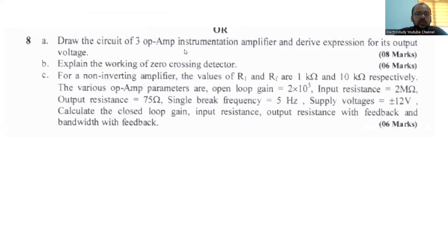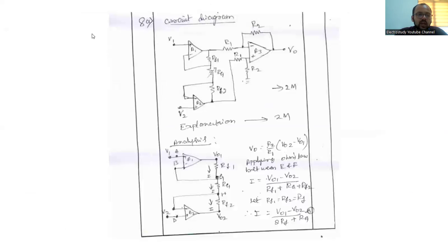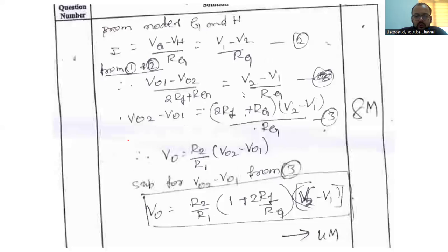Question number 8A. Draw the circuit of three op-amp instrumentation amplifier and derive expression for output voltage. We have to draw the circuit diagram. Like this you have to provide the circuit diagram. This is our circuit diagram. Draw the circuit diagram. Better give the brief explanation. You have to perform the mathematical analysis like this. You try to keep on working. Perform the mathematical analysis. If you refer any other textbooks, you can go ahead. Whichever is comfortable, you can go ahead with that. Ultimately, you will be getting the output voltage equal to R2 by R1 into 1 plus 2RF by RG into differencing voltage, V2 minus V1.